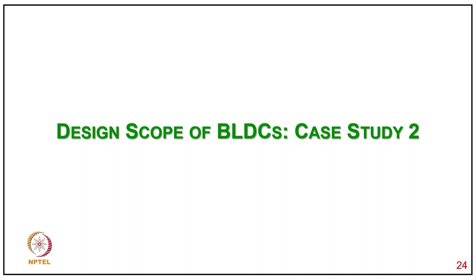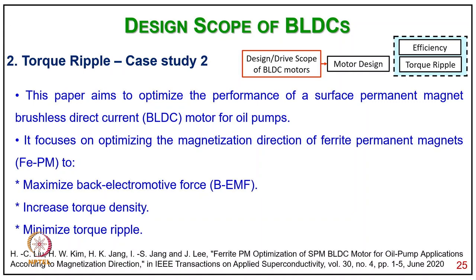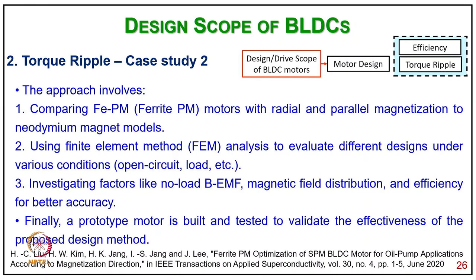Coming to design scope for BLDC case study 2 on torque ripple: this work aims to optimize the performance of surface PM motors by focusing on optimizing the magnetization direction of ferrite permanent magnets to maximize back EMF, increase torque density, and minimize torque ripple. The approach involves comparing FAPM motors with radial and parallel magnetization to the radial MRM-1 magnet model, using finite element analysis to evaluate different designs under various conditions — open circuit, load, etc. — and investigating no-load vacuum, magnetic torque distribution, and efficiency. A prototype is built and tested to evaluate the effectiveness of the proposed design method.